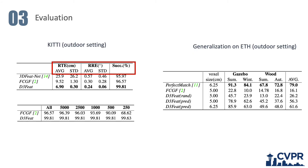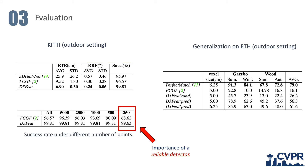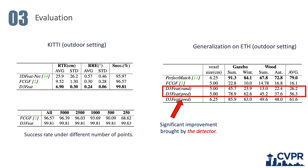Our method also outperforms the state-of-the-art on all metrics on the KITTI dataset. Even using only 250 points, D3FIT still achieves a 99% success rate, while FCGF drops to 68% due to the lack of a reliable detector. We further test the generalization ability on the ETH dataset, where we can still find significant improvement brought by our detector.